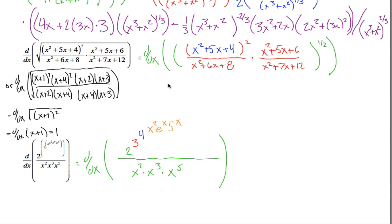The next one — it's a lot easier if you do some algebra first. If you factor each of these polynomials and cancel most of them out, before doing any calculus, you get the square root of x plus 1 squared. The square root of x plus 1 squared is just x plus 1, and the derivative of x plus 1 is just 1. If you don't see that simplification, you'd have chain rules inside product rules inside quotient rules inside more chain rules.